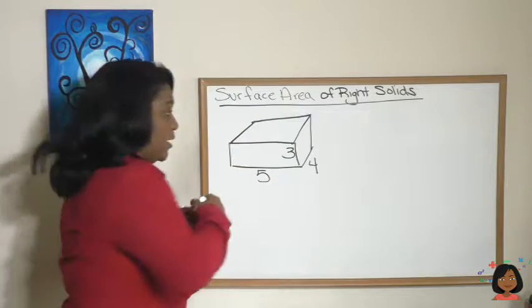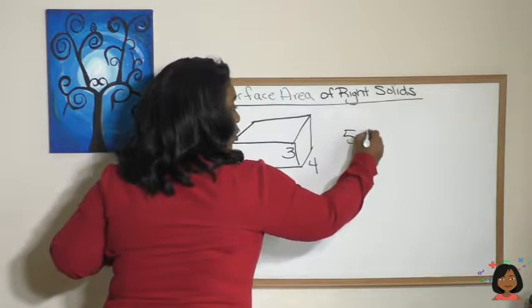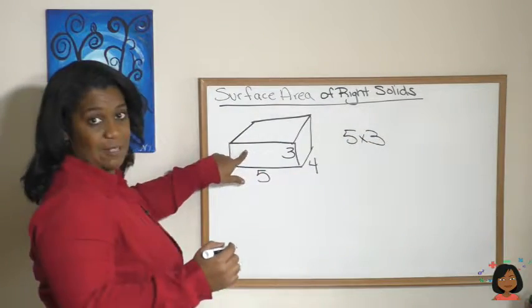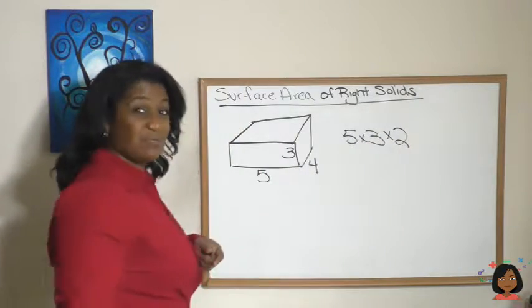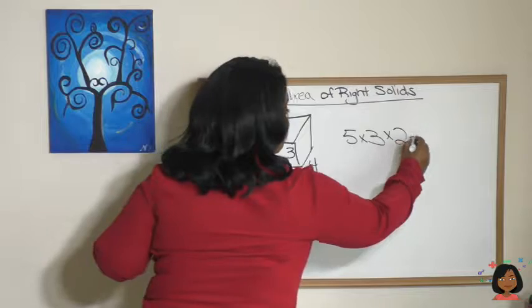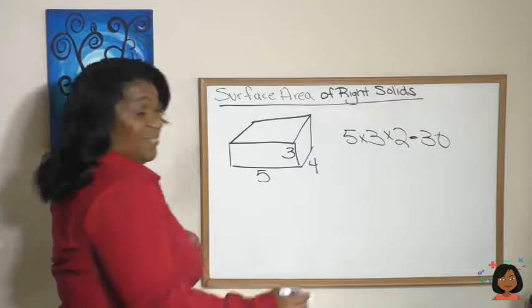All right, let's start with the front and the back. It's gonna be five times three. And then to make sure we get the second one in, that's just the front. Let's do the back by multiplying it times two. Five times three is 15 times two is 30.